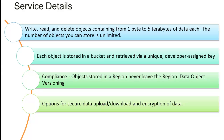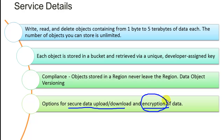S3 also provides an option to secure data — secure upload, download, and encryption of data as well. You can encrypt the data yourself before uploading, or you can ask AWS to encrypt your data before putting it in any of the S3 buckets. Either you encrypt yourself or you let Amazon encrypt your data — it is all up to you.